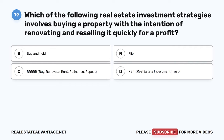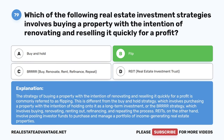Question 79. Which of the following real estate investment strategies involves buying a property with the intention of renovating and reselling it quickly for a profit? A. Buy and hold. B. Flip. C. BRRRR — Buy, Renovate, Rent, Refinance, Repeat. D. REIT — Real Estate Investment Trust. The correct answer is B: Flip. The strategy of buying a property with the intention of renovating and reselling it quickly for a profit is commonly referred to as flipping. This is different from the buy-and-hold strategy, the BRRRR strategy, or REITs, which involve pooling investor funds to purchase and manage a portfolio of income-generating real estate properties.